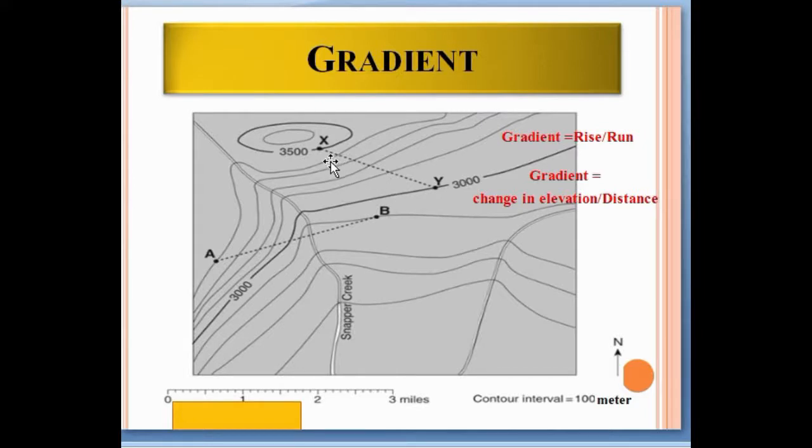For calculating gradient, we have the formula: gradient equals rise upon run, or gradient equals change in elevation divided by distance. Rise is the elevation change from this point to this point. The change in elevation is 3500 minus 3000, which equals 500. So 500 is divided by distance. Now we calculate the distance from this point to this point.